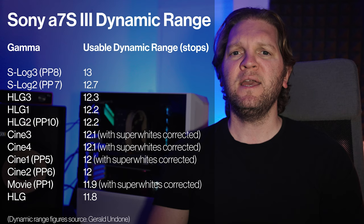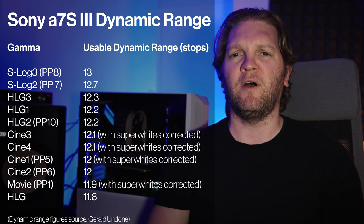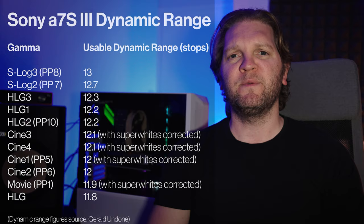Different picture profiles or gammas have the ability to capture a greater or lesser range of lights to darks — highlights to shadows — known as the dynamic range. You can see in this table, sorted from best to worst, that the picture profile or gamma you use will greatly affect the final image. A wider dynamic range can potentially give you a more cinematic looking image with more shadow and highlight details. These usable dynamic range figures are published by Gerald Undone — you should definitely check out his video as he goes into so much more detail, and I'll put a link in the description.